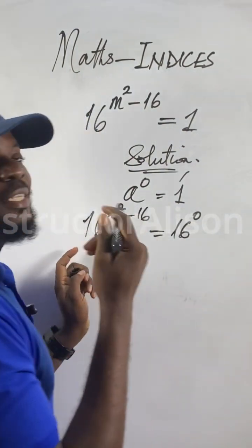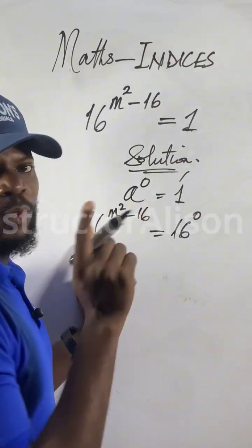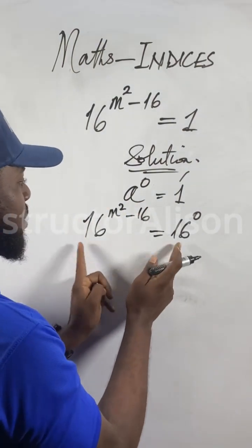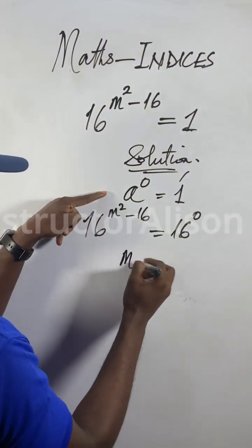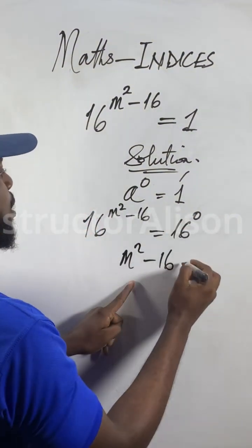Now the rule for exponential functions or indices equations: when the base is the same like this, the bases are equal, leave them out and focus on the power. m squared minus 16 equal to 0.